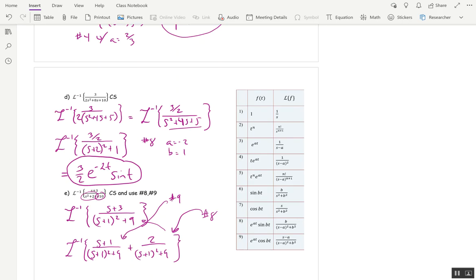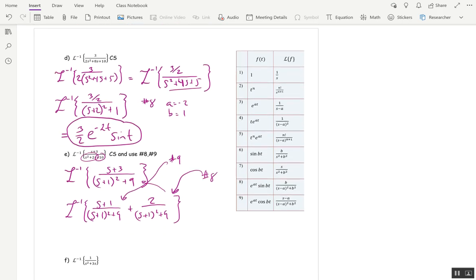So this guy is number 9, and this guy is number 8. So we're going to use, and this is very common. Once you complete the square, you'll often end up with a number 8, 9 combo. So one's going to be sine, one's going to be cosine. So in both cases, a is negative 1, and b is 3. So our first guy is going to be e to the negative t, cosine 3t. And our second guy, we need a b on top, so we need a 3 on top, we have a 2. So if we put a 3 on top, we better divide by 3 later. So this one will be 2 thirds e to the negative t sine 3t.